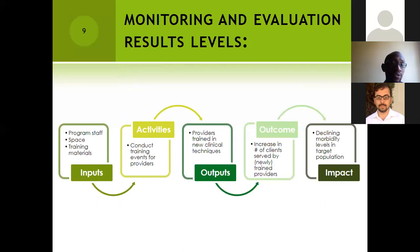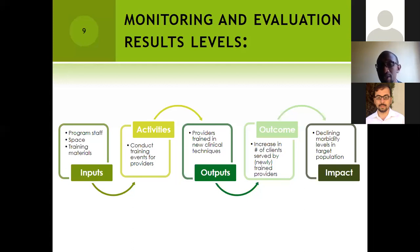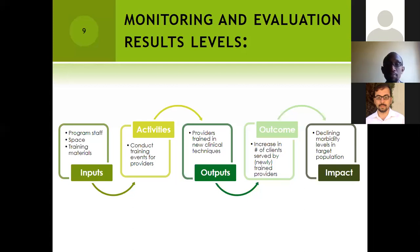Here is a good example to keep in mind to clearly identify results levels in M&E. When you talk about inputs, do we have staff? Do we have training materials? Then you conduct a training event. The key output — the immediate result — is that the providers get trained in new clinical techniques. The outcome is an increase in the number of clients served by the providers. And the impact is declining morbidity levels in the target population.